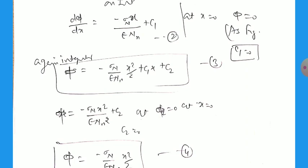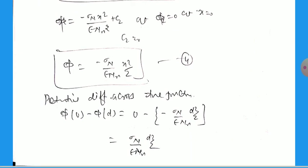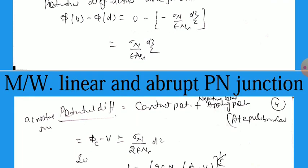Finally, we can write the potential phi equal to minus sigma N by epsilon N times x square by 2. The potential is proportional to the square of x, the distance from the central point. The potential difference across the junction phi 0 minus phi d, phi 0 is 0, so we get sigma N by epsilon N times d square by 2. This is the potential difference between the two sides of the depletion layer.